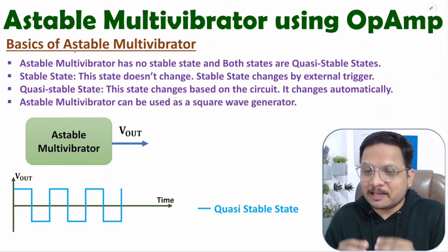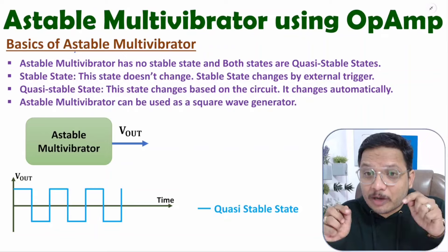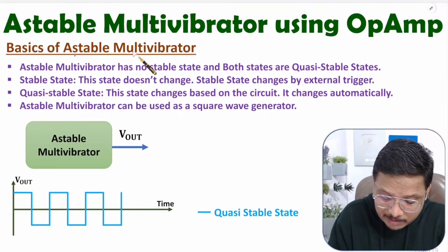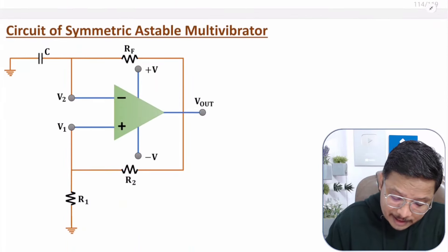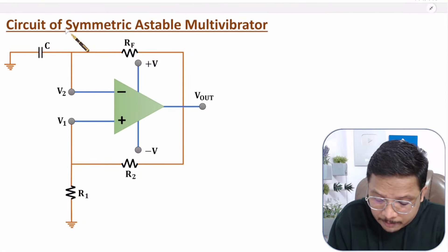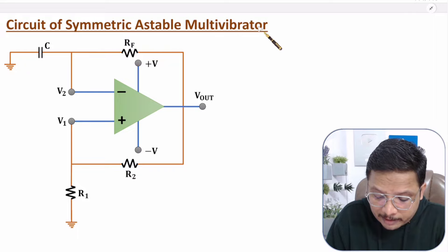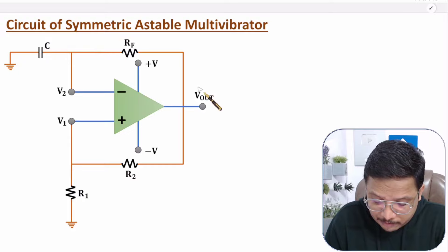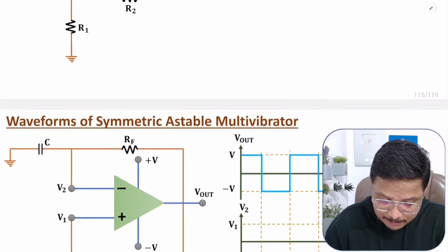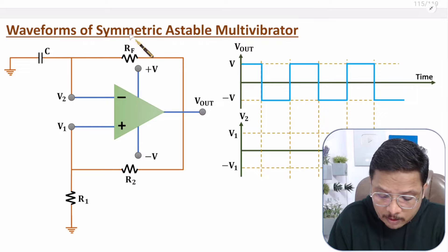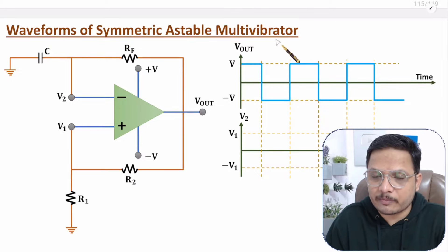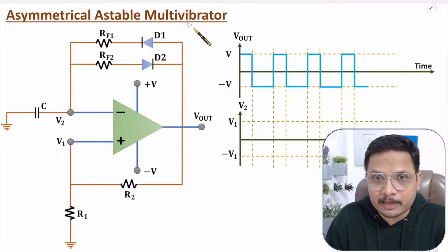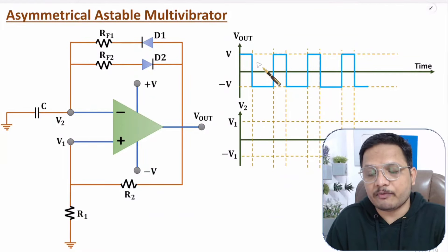Before I start with the explanation, let me show you how many things I am going to cover in this video. First I will explain the basics of the astable multivibrator. After that, I will explain the circuit diagram of the symmetric astable multivibrator. With this circuit, I will derive the output equation, then explain the working and waveforms. At last, I will explain the asymmetrical astable multivibrator along with its working and waveforms.